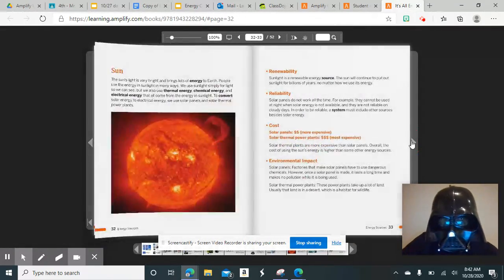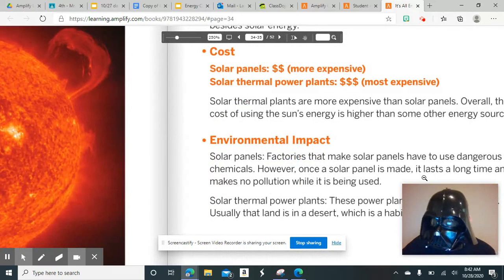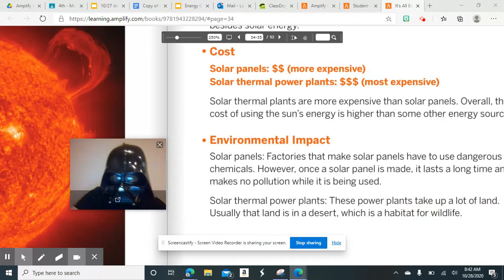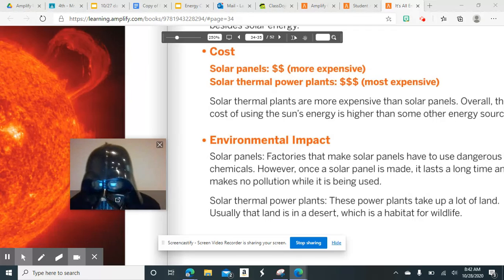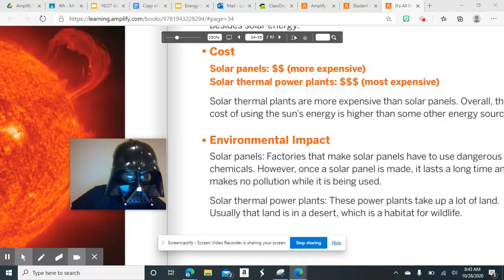If I was to look at the sun, environmental impact is located down here at the bottom. As we're reading this, it says that solar panels, and specifically in factories that make solar panels, they have to use dangerous chemicals. However, once the panel is made, it's going to last a long time, and it makes no pollution while it's being used. So this is actually a pretty good environmental impact.